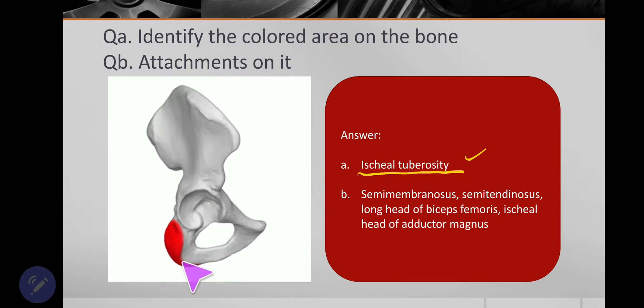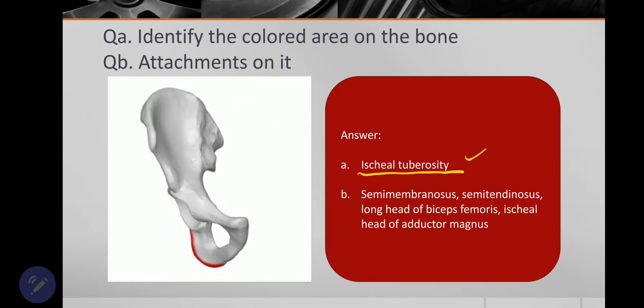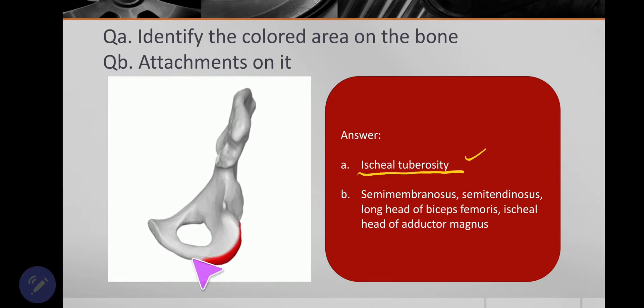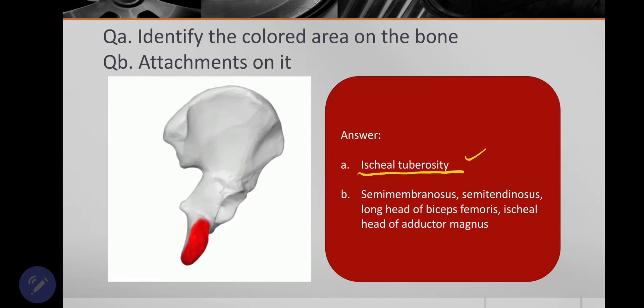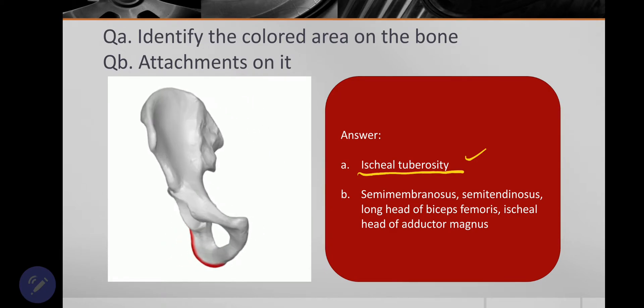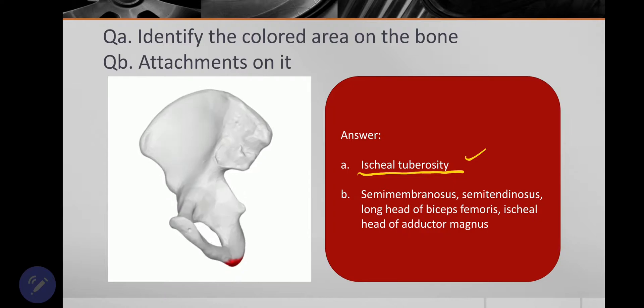It's the part of the bone on which we sit. It's covered by the largest muscle of the body, that is gluteus maximus. So it's not subcutaneous, it's covered by gluteus maximus.